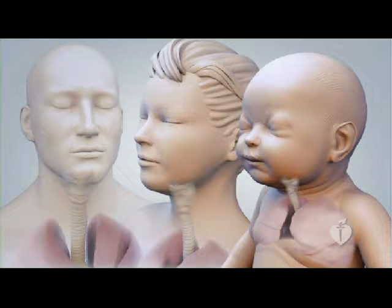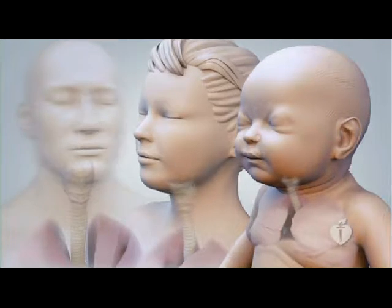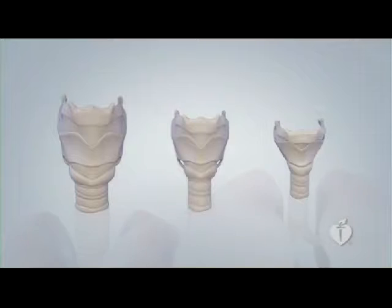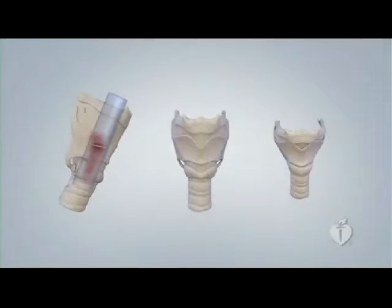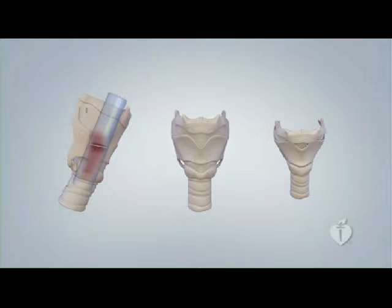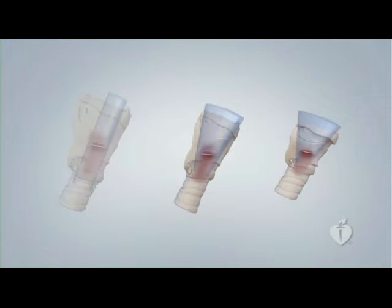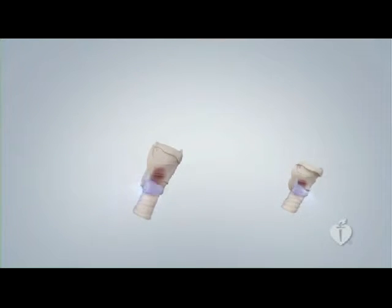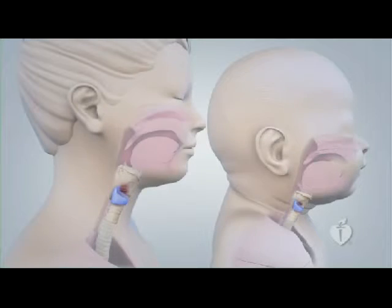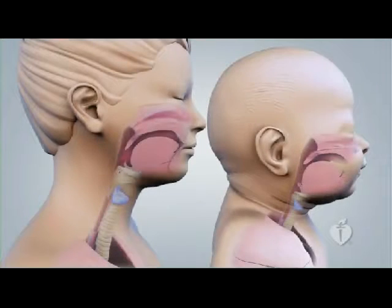These illustrations of an adult, child, and infant show that the airways of children and infants are considerably smaller and shorter than those of adults. The adult larynx is cylindrical, with the narrowest opening at the level of the vocal cords. In contrast, the larynx of infants and young children tapers into a funnel shape. The airway continues to narrow below the vocal cords to the cricoid cartilage, which creates a non-distensible ring around the airway.